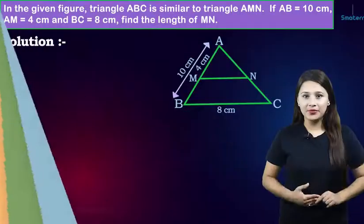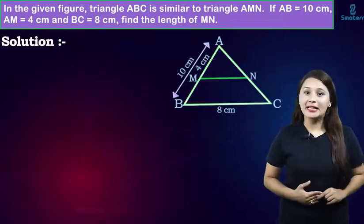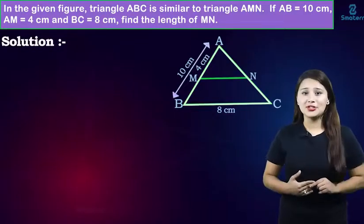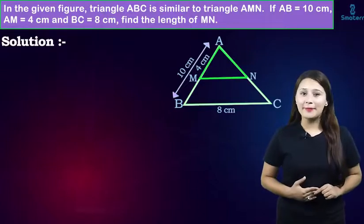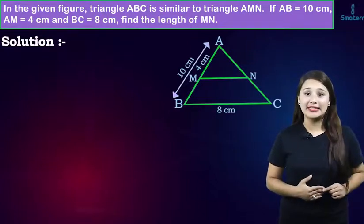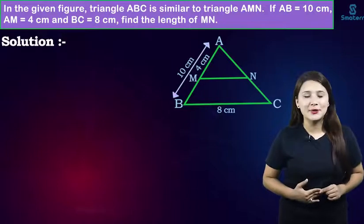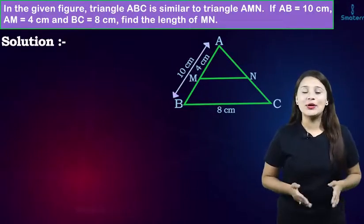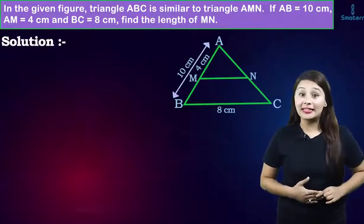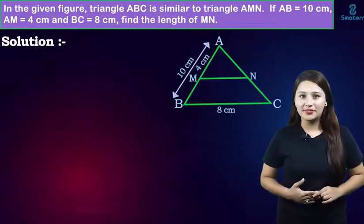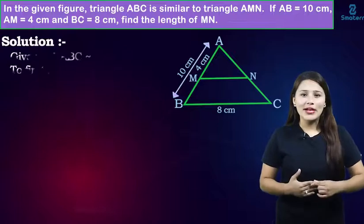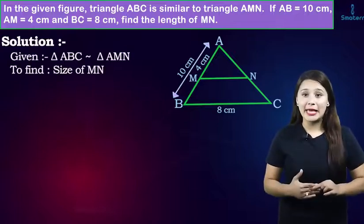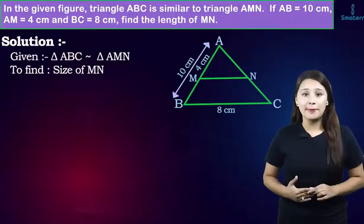For now, let's perform some numeric problems quickly. In the given figure, triangle ABC is similar to triangle AMN. If AB is equal to 10 cm, AM is equal to 4 cm, and BC is equal to 8 cm, find the length of MN. Here in this problem, we are given two triangles ABC and AMN, and they are similar.